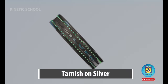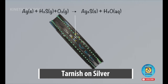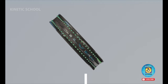Tarnish on silver. Silver tarnish results from the formation of silver sulfide. When silver reacts with hydrogen sulfide in the atmosphere, it readily forms a surface tarnish of silver sulfide.